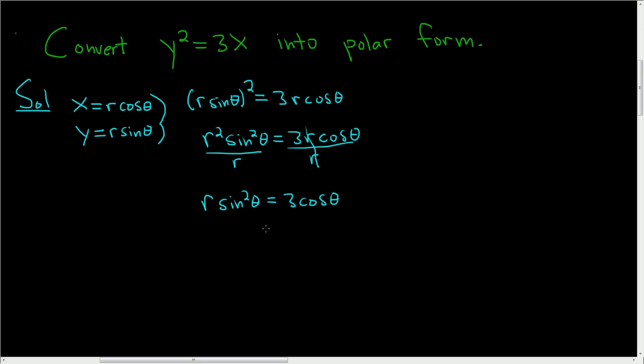To solve for r, divide by sin² θ on both sides. That leaves us with r = 3 cos θ / sin² θ, and that is the answer.